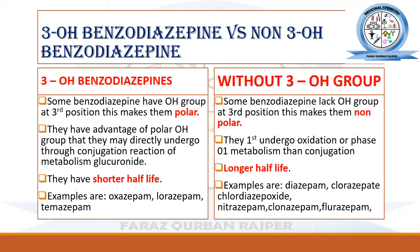Benzodiazepines without the 3-hydroxyl group have no substitution at the third position, making them non-polar. They must first undergo phase 1 oxidation metabolism. During oxidation, a hydroxyl group is introduced into their chemical structure, increasing polarity, and then they can undergo phase 2 conjugation to form the glucuronide.